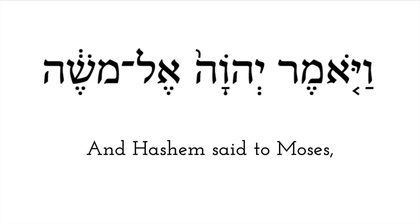Then we have an aleph with a segol which says 'eh,' and then a lamed — together this says 'el.' El means 'to.' And this is a mem and a shin — this dot does double duty: it tells us it's a shin but it also is the vowel for the mem, which says 'oh,' so this is 'mo.' And this is a shin with a segol — 'sheh' — and the hey is silent. So Mosheh. The accent is on the last syllable. Mosheh is of course Moses in Hebrew. So: Vayomer Adonai El Mosheh.